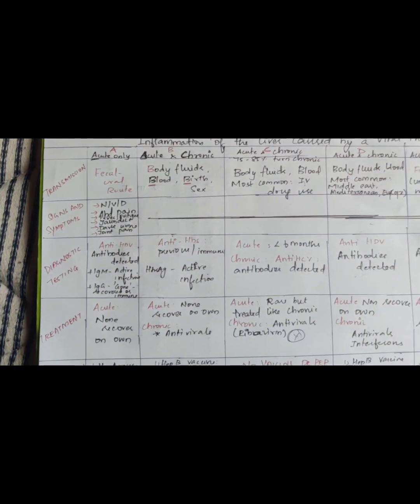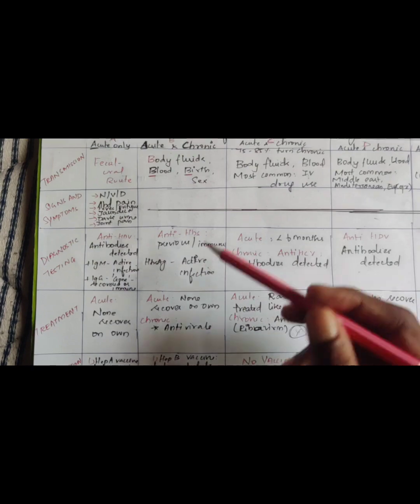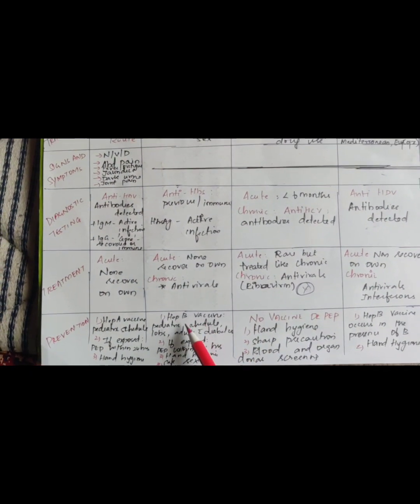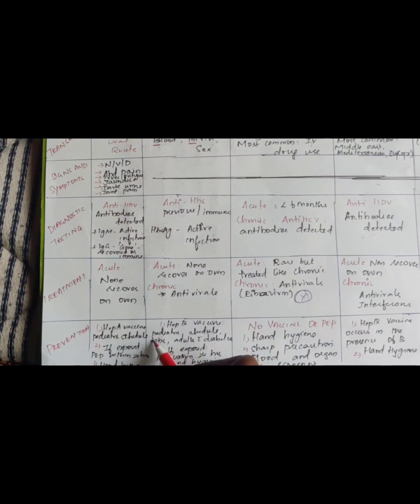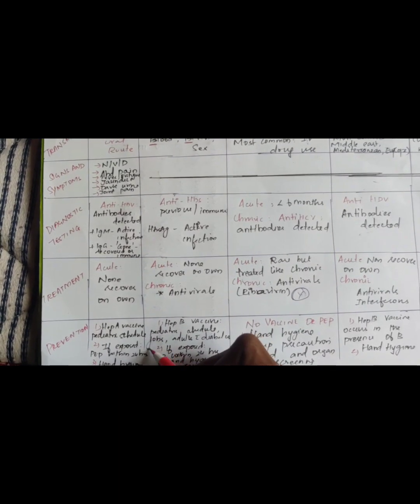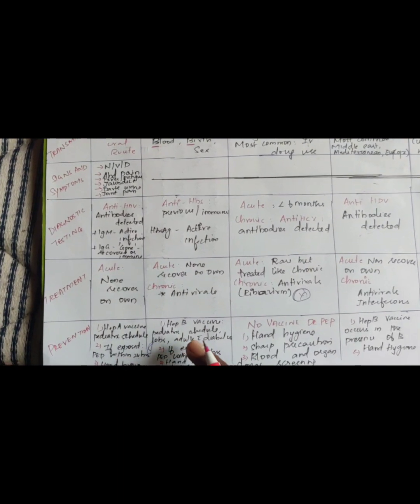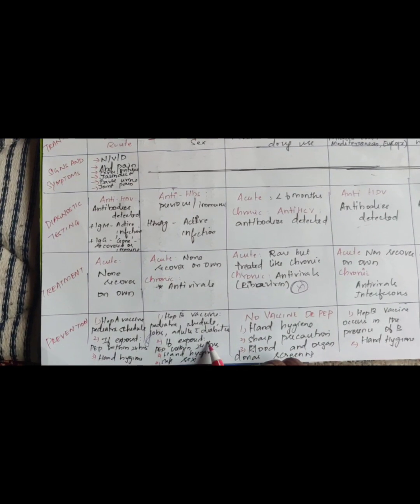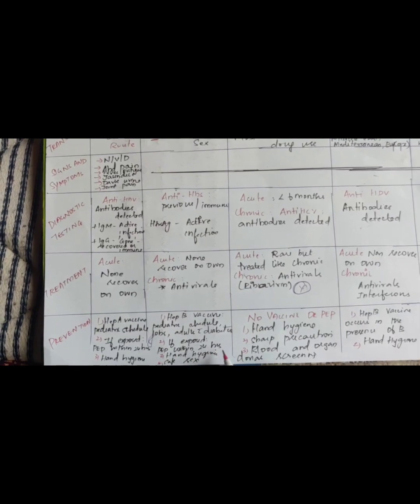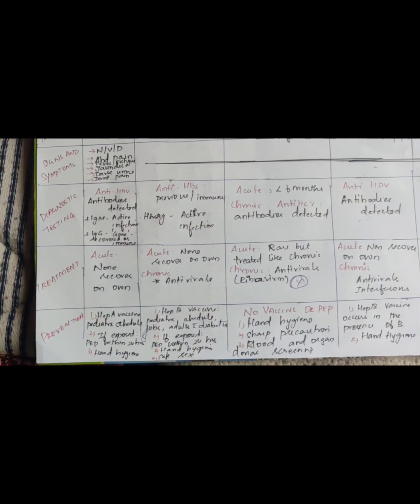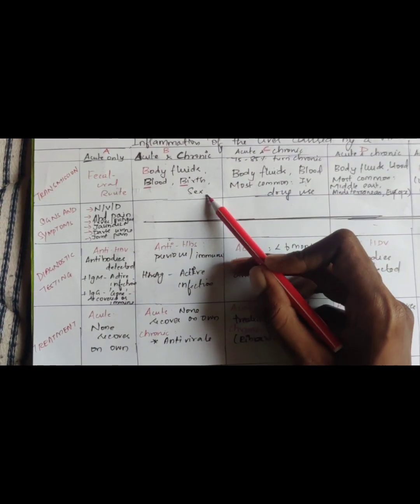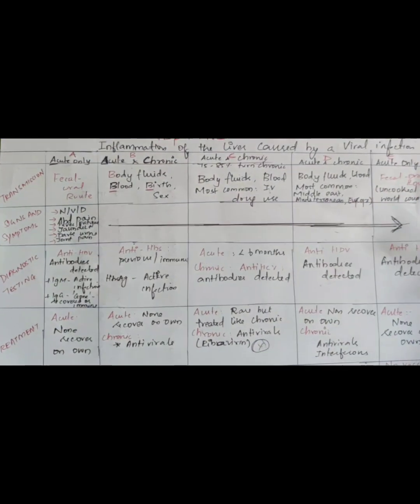Hepatitis B: this body fluid and treatment follow. Hepatitis B vaccine, pediatric schedule, jobs for example medical field. Next, adults with diabetes, vaccination. Next exposed, post-exposure prophylaxis within 24 hours follow. Hand hygiene follow. Sex: safe sex follow.